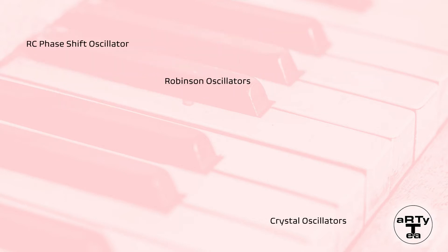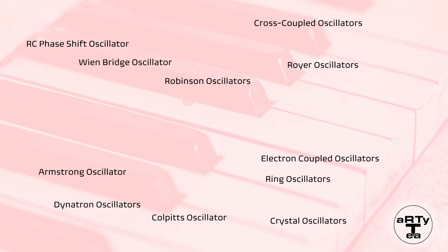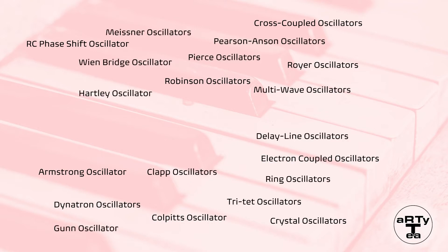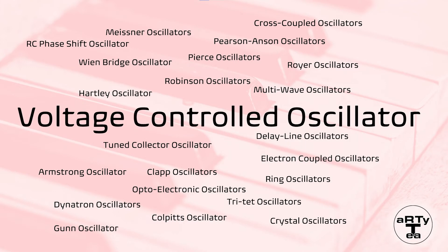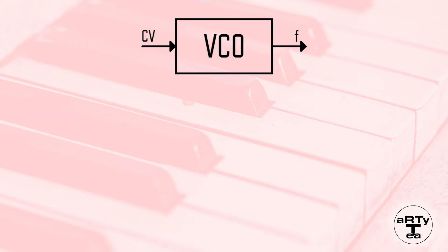There are many types of oscillators. Although you could use some of these in a synth environment, discussing them all would make this a long and boring video. Let's just stick with a type that suits our purpose, which is the voltage controlled oscillator. A voltage controlled oscillator is an oscillator that allows us to control the output frequency by applying a voltage to its input. This voltage is appropriately named control voltage. The higher the control voltage is, the higher the output frequency will be.